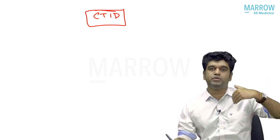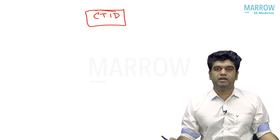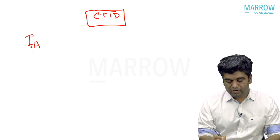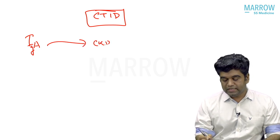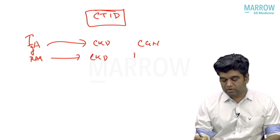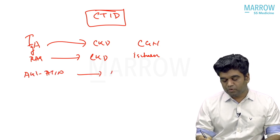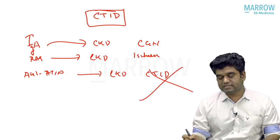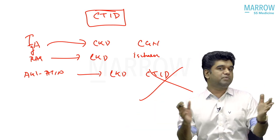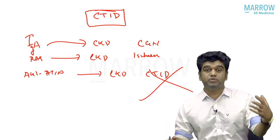When I say CGN, I don't need a separate module because I've already covered IgA and MPGN. IgA nephropathy in some patients going to CKD is called CGN. RAS going to CKD is called ischemic. But an ATI going to CKD is not what we call CTID — this is completely wrong. CTID is not a transformation of ATI; CTID is a completely different disease in itself. This is an important concept, especially for new postgraduate students not yet well-versed with nephrology.